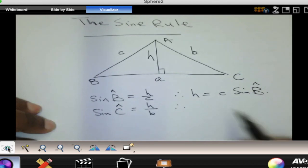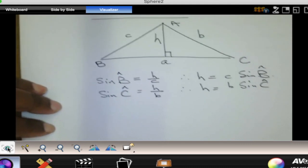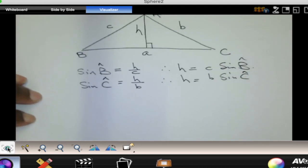And if you make h the subject, you get h is equal to b multiplied by sine of angle C.